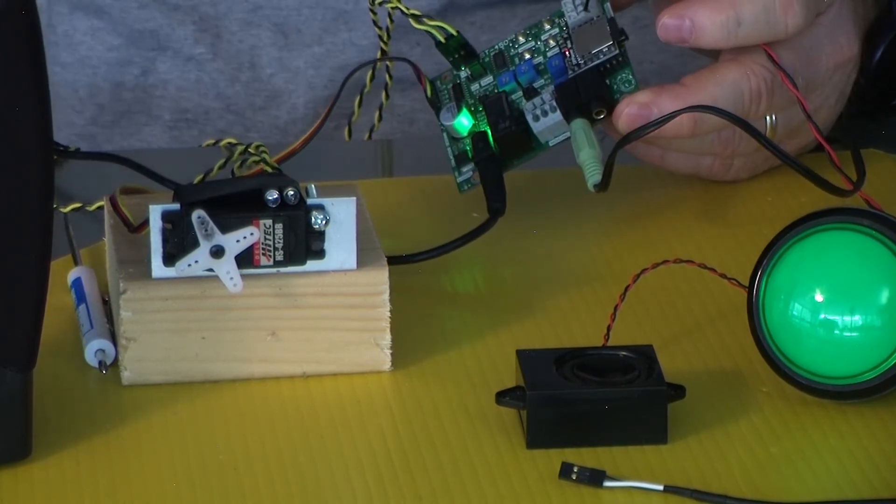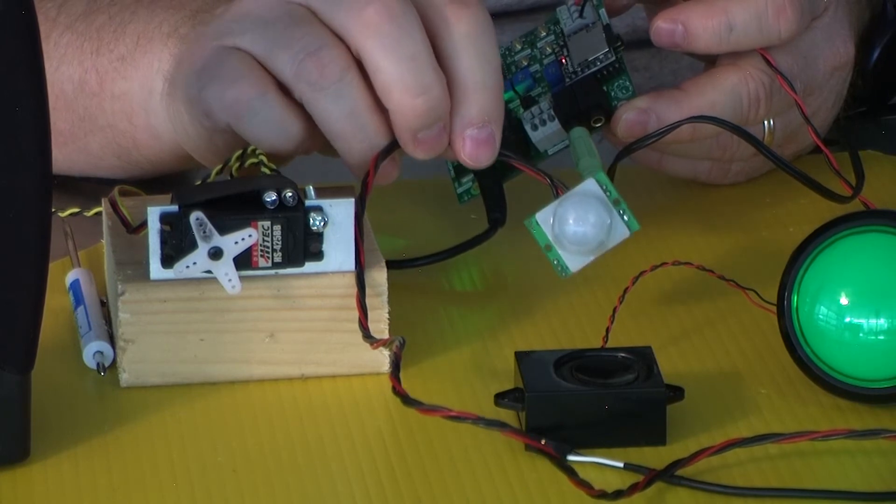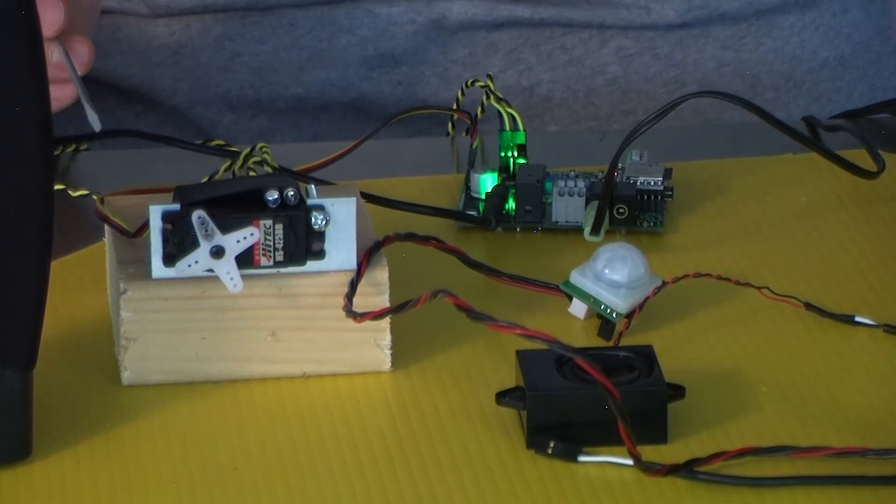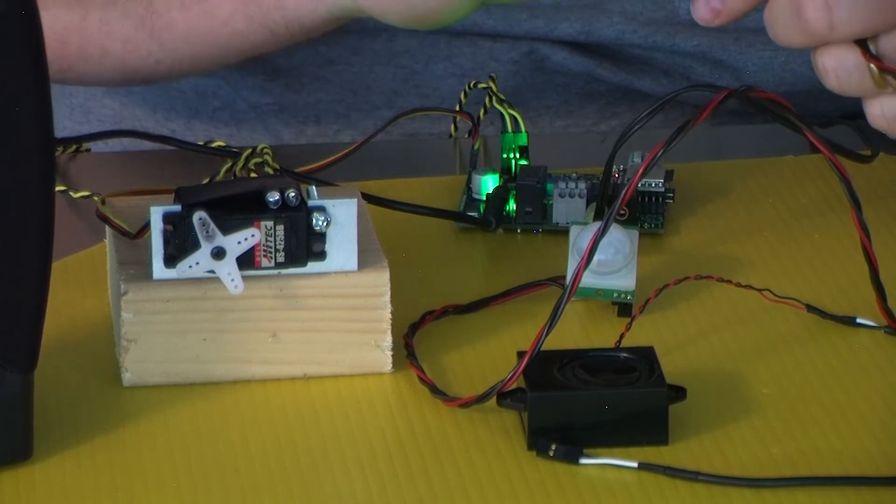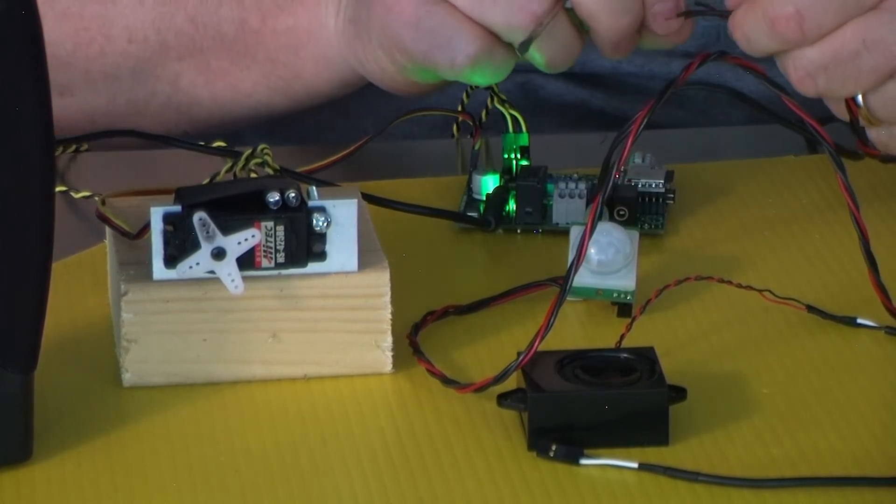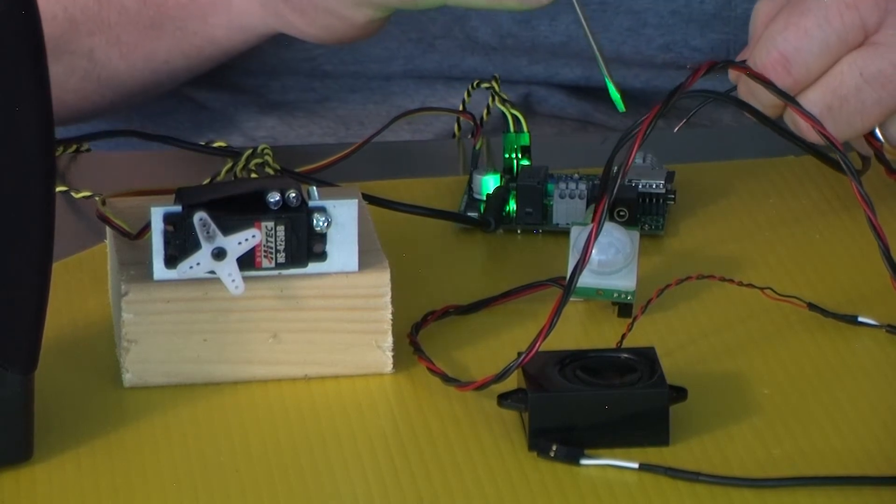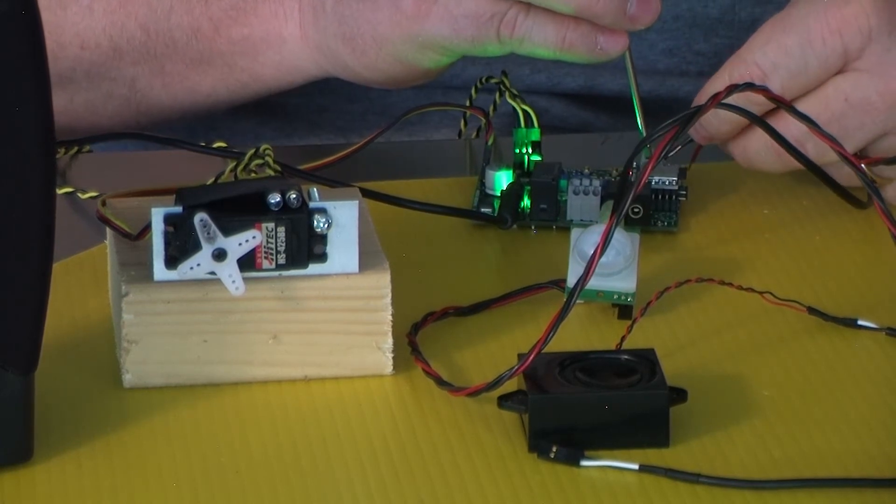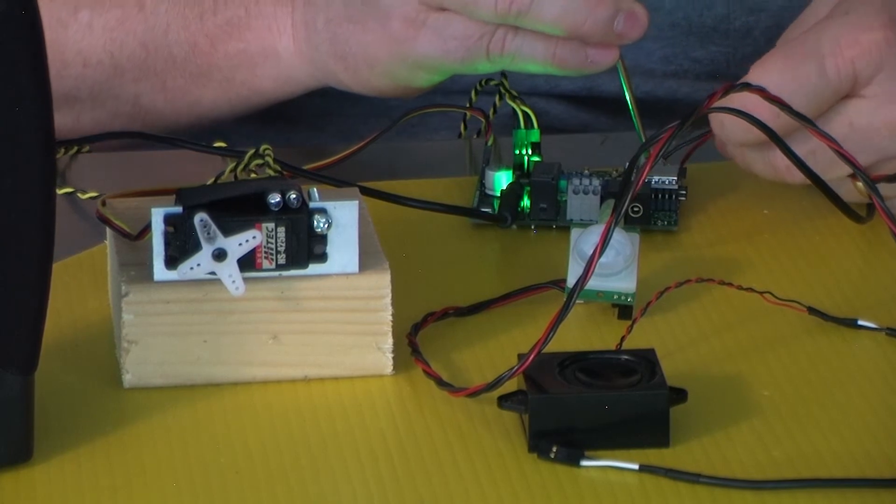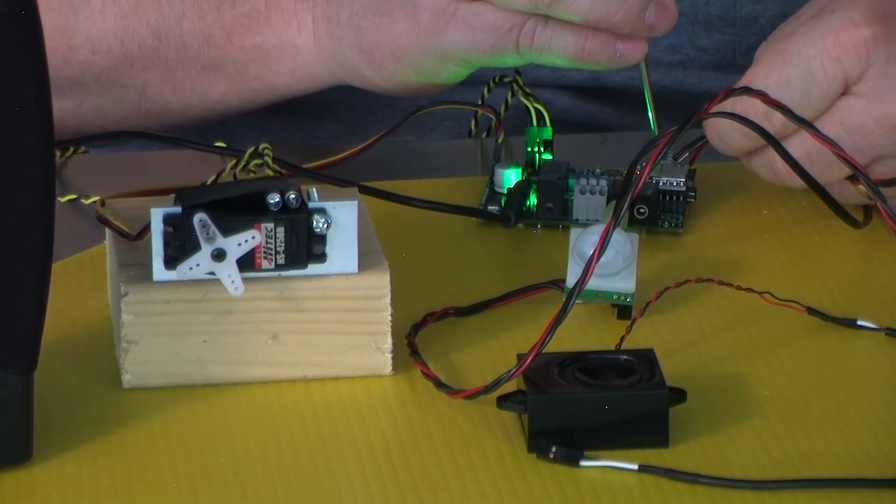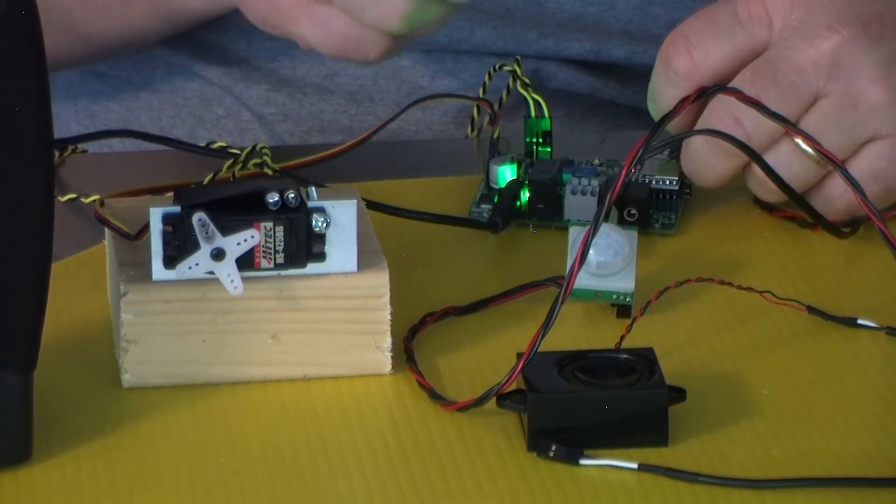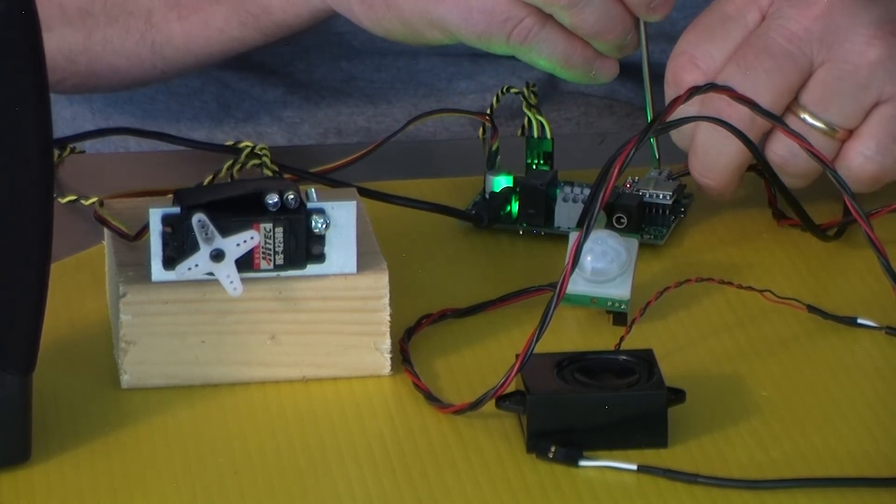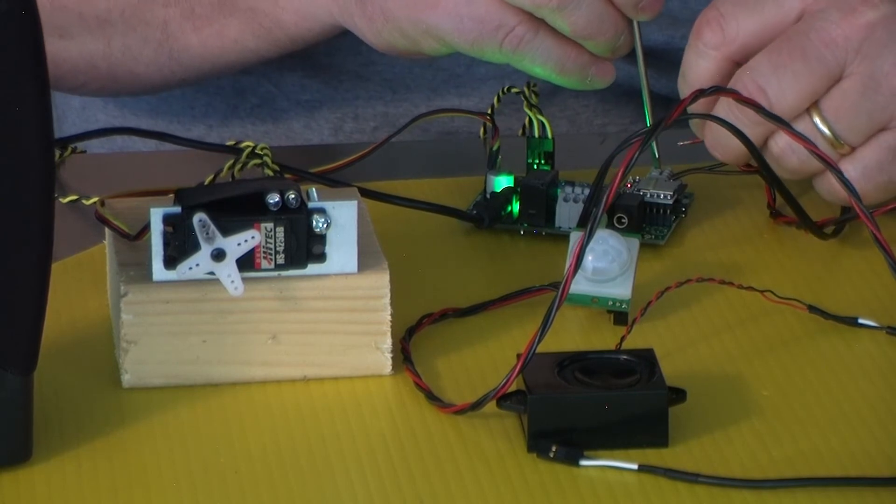I also have a motion sensor here that I can hook up to this. Press down on those spring-loaded latches to release the connection. And again, on my motion sensor, it takes five volts, it has a signal out, and a ground wire. The ground wire is black, so it's going to go in the middle. The signal wire is brown, so it's going to go in that first joint. And then the red wire is going to go into the one marked five volts. Now when I do this, it may immediately start triggering.